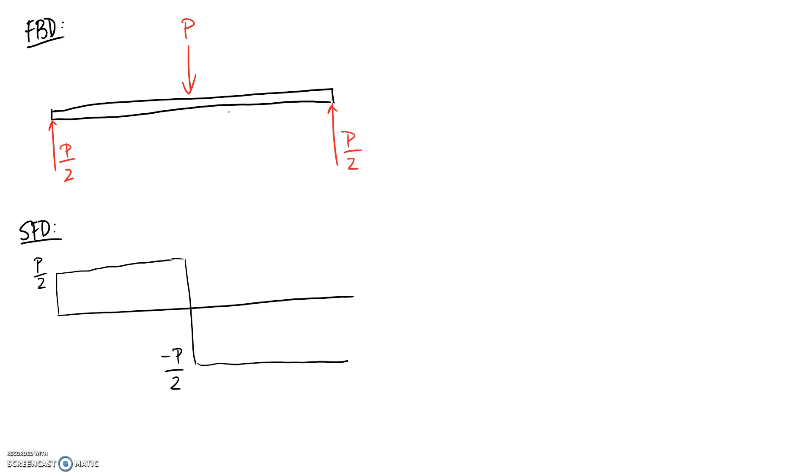Keep going across until we get to the end because there's nothing happening. This final force pushes us back up to zero because negative P on 2 plus P on 2 is zero. So that's our shear force diagram.